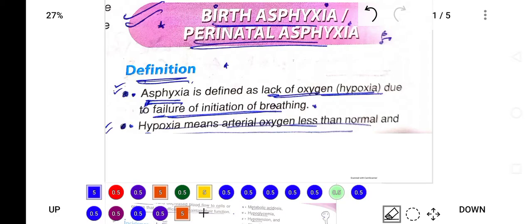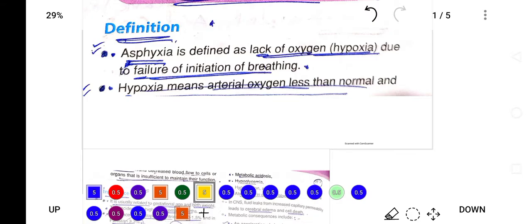Welcome everyone. The topic is birth asphyxia. As the word indicates, birth asphyxia means strangulation or decreased oxygen supply to the body at the time of birth. It is also known as perinatal asphyxia. The definition for this condition is lack of oxygen or hypoxia due to failure of initiation of breathing. Hypoxia means arterial oxygen is less than normal.